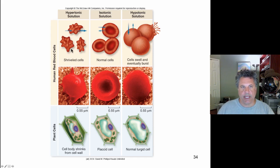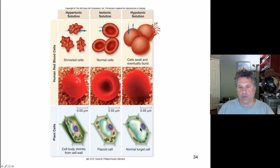In plant cells in a hypertonic solution, the cell will shrink away from the cell wall. In an isotonic solution, everything's fine. And in a hypotonic solution, the cell swells but a turgidity exists — as the cell swells, it runs up against the cell wall and is prevented from bursting.